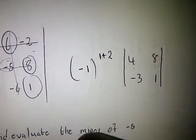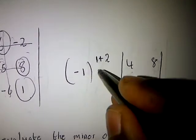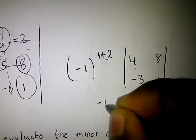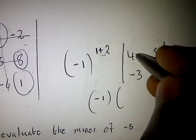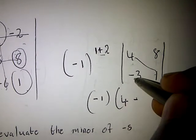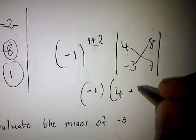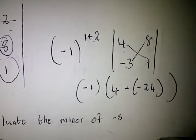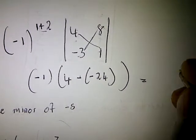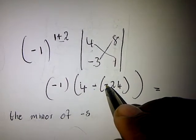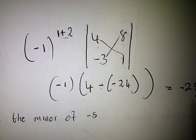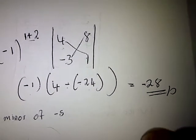To evaluate the cofactor, we simplify. Negative 1 to the power of 3 gives us negative 1. Then we cross-multiply the minor: 1 multiplied by 4 gives 4, minus negative 3 multiplied by 8, which gives negative 24. So 4 minus negative 24 equals 28. Then negative 1 multiplied by 28 gives us negative 28. So the cofactor of 6 is negative 28.